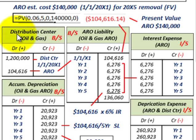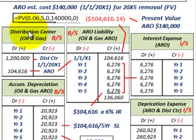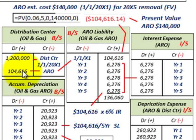We debit the cost of this distribution center at $1.2 million plus the ARO liability — the cleanup liability at its present value of $104,616 — all in the same account at the purchase date of 20X1. So let's continue on with this liability.